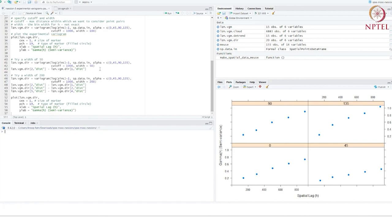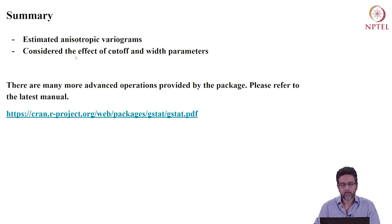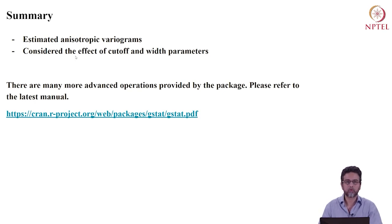So what did we do today? We estimated anisotropic variograms, which can be very useful — anisotropy is a property of most spatial processes, as very few are truly isotropic or the same in every direction. We also considered the effect of cutoff and width parameters on the final estimated result. This is just the beginning of geostatistical modeling with the gstat package. If you want more, please go and read the latest manual — my goal is just to get you started. That's it for now, thank you very much for your attention.